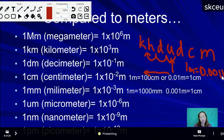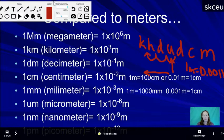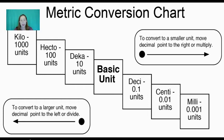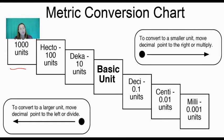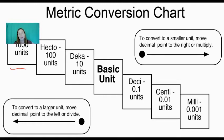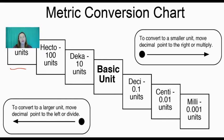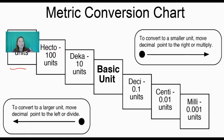You can view the metric chart with boxes: kilo, hecto, deca, base unit, deci, centi, milli. As you go from left to right, you move the decimal that many places. Converting to a smaller unit means moving the decimal to the right — you're multiplying by 10 each time. Moving to the left means converting to a larger unit and dividing by 10, because you have many small units in one large unit.